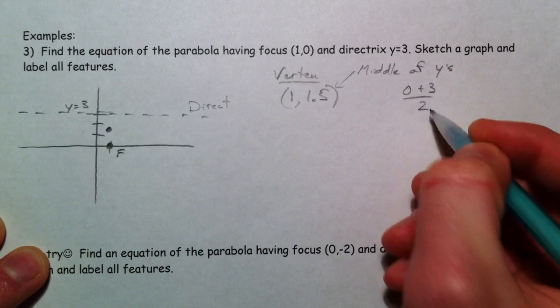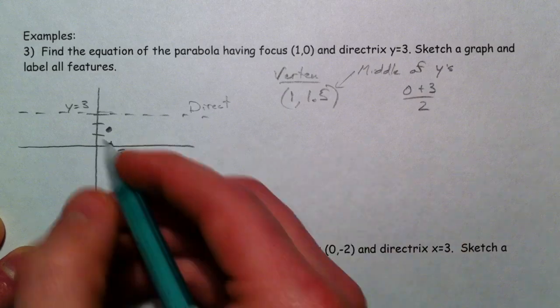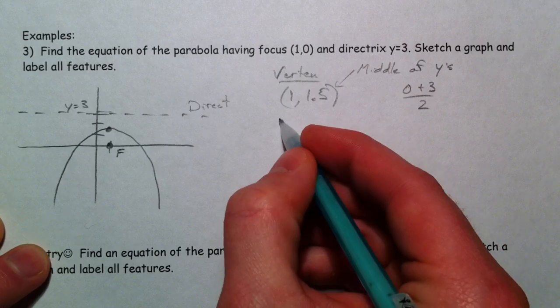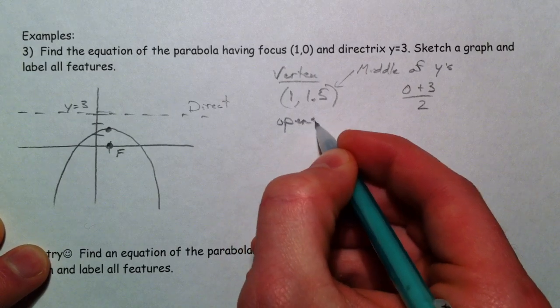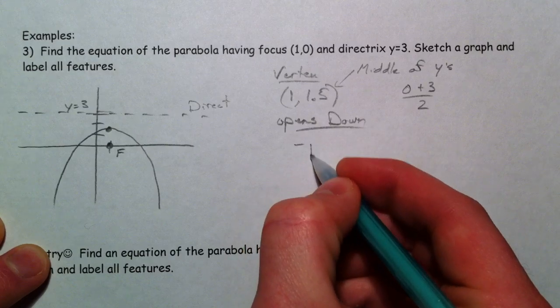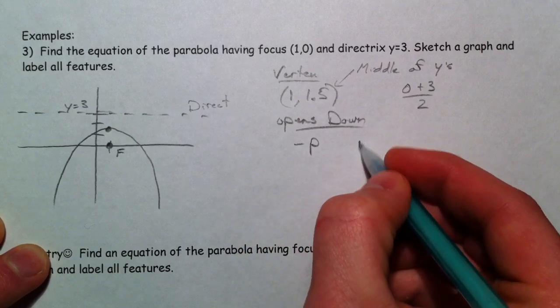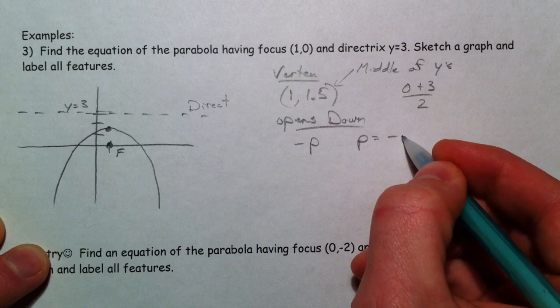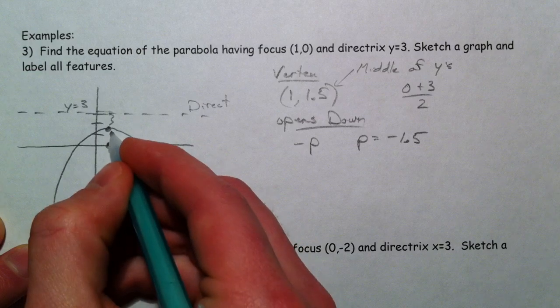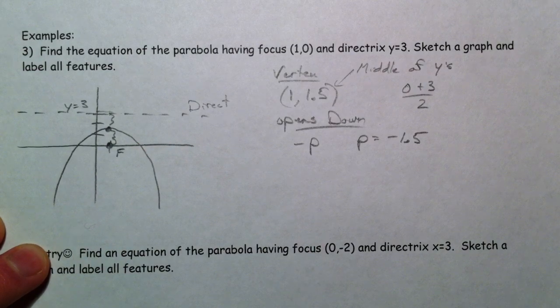0 plus 3 divided by 2. The next thing you have to determine: opens down. Opens down, it's going to have a negative p, and that p is going to equal negative 1.5, because it's 1.5 to the directrix and 1.5 to the focus.